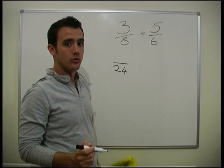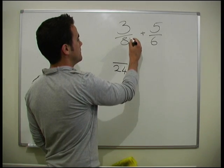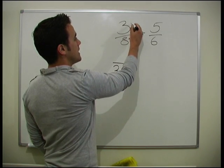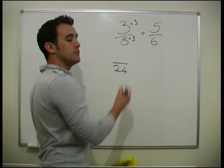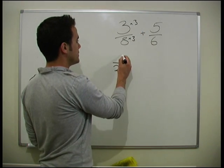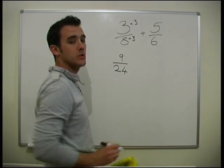And how do we get 8 to 24? We times it by 3. So I need to do the same to the top. Remember, whatever you do to the bottom, you do to the top. So we get 9 over 24.